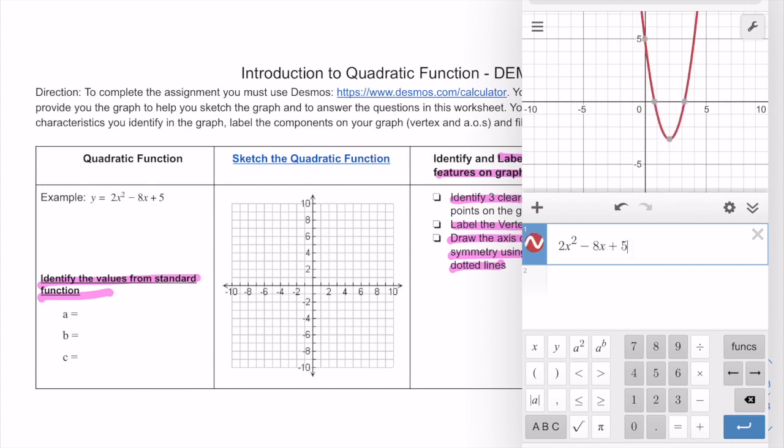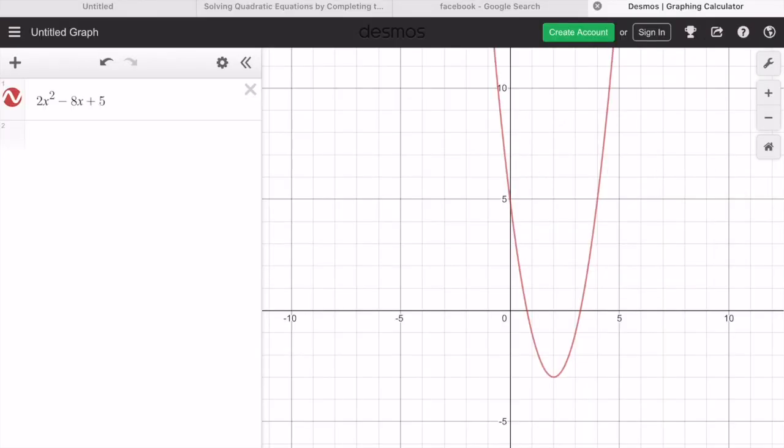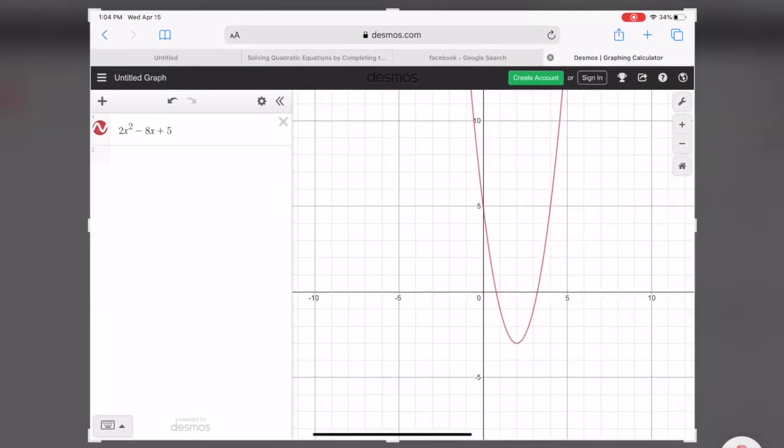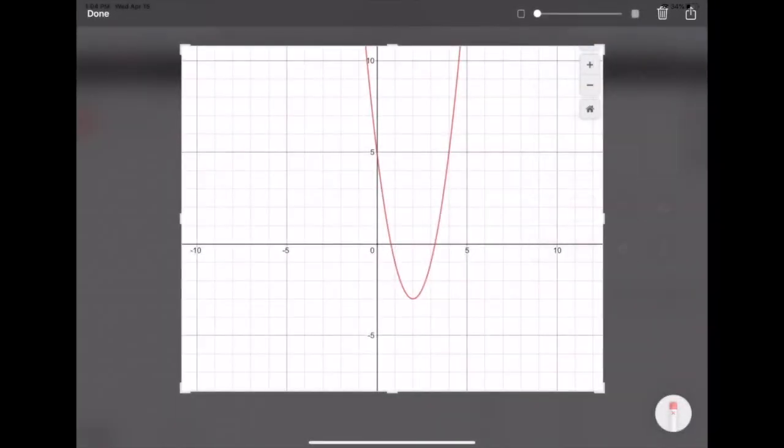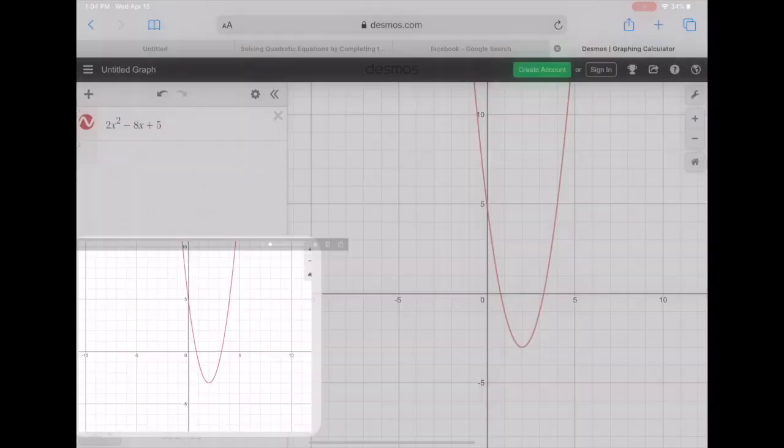Then what you can do now is make this page big so you could take a screenshot. Remember our graph that we're working with is negative 10 by positive 10, so all you want to do is find a good picture to help you paste it onto your Notability so you can use that to sketch your graph. Once you take your screenshot, you can touch your picture and maybe even crop it.